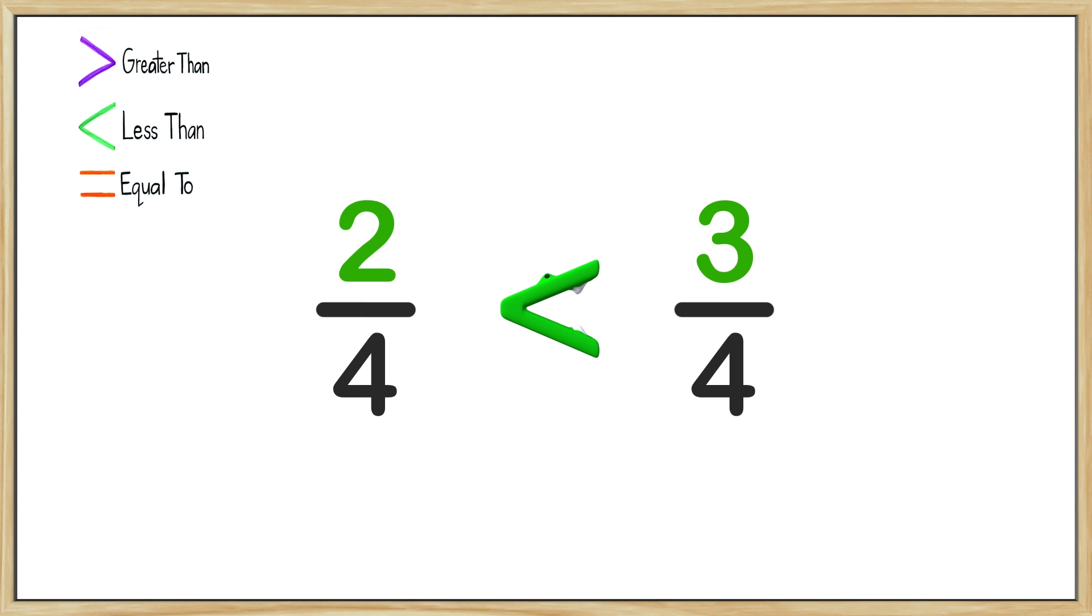Now another way we could have compared these two fractions is by noting that the denominator is the same in both fractions. Both fractions have four total parts. This means that we can look at the numerator and the bigger the number means that fraction is bigger. The numerator on the left is two and the numerator on the right is three. Three is bigger than two, so we know 3/4 is bigger than 2/4.